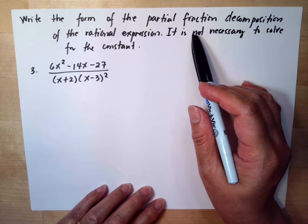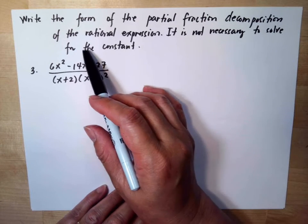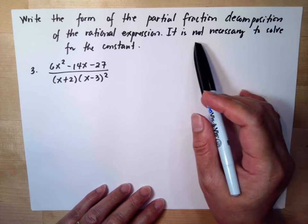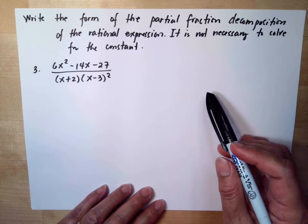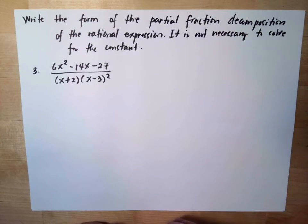Write the form of the partial fraction decomposition of the rational expression. It is not necessary to solve for the constant. So meaning we will just decompose it, we will just do step 1 of decomposition.